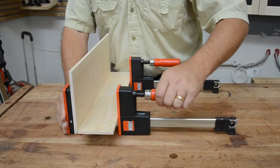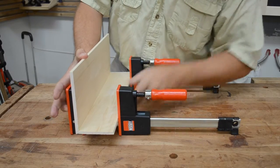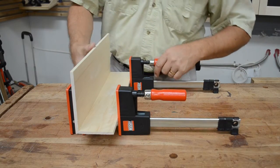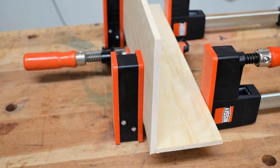The Revo Juniors provide the same 90 degree jaw clamping capabilities as the Revo's, along with large jaw surfaces with removable pads, bar lengths from 12 to 50 inches, and up to 900 pounds of clamping force.